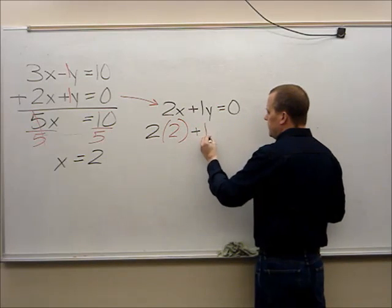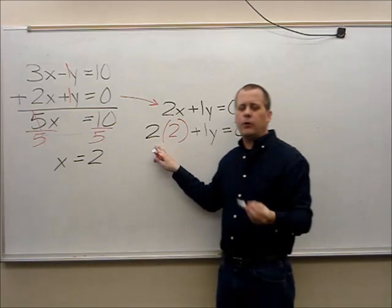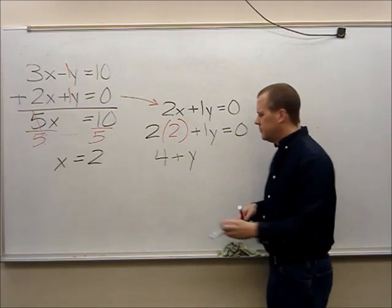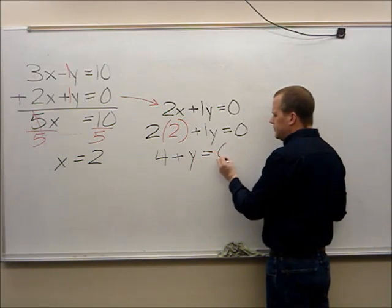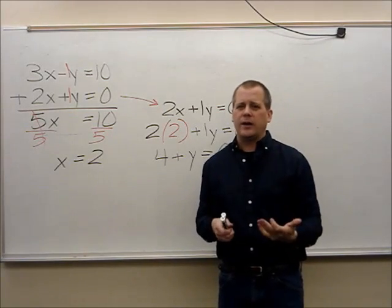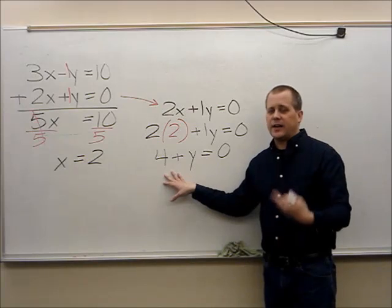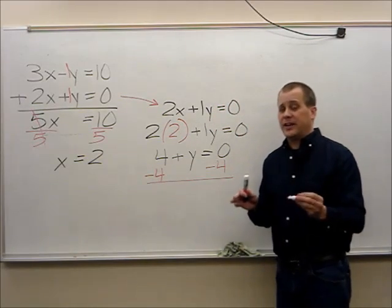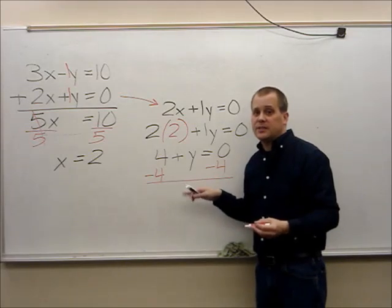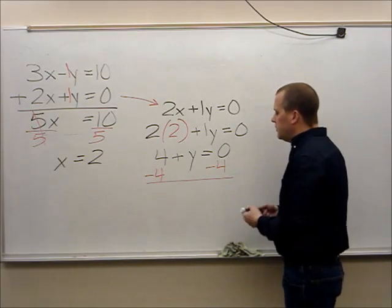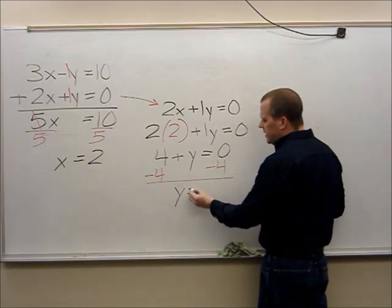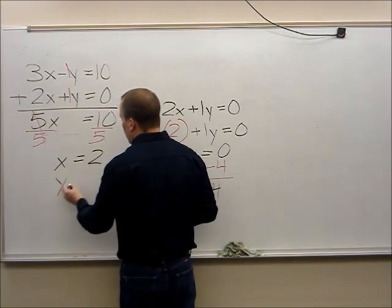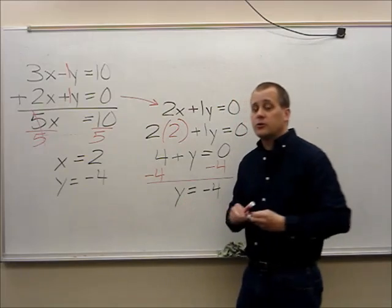Continuing through this, plus 1y is equal to 0. What's 2 times 2? 2 times 2 is 4, plus y. I can take away the 1 — we all know there's a 1 in front of this y. Now I ask myself, 4 plus what equals 0? I'll subtract 4 from both sides. 4 take away 4 is 0, so y is now all by itself. 0 take away 4 is negative 4. I've found my point of intersection — y is equal to negative 4. It's where those two lines will cross.